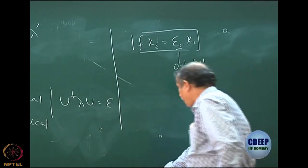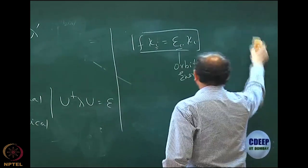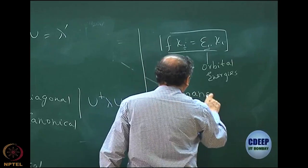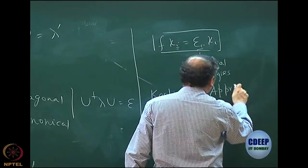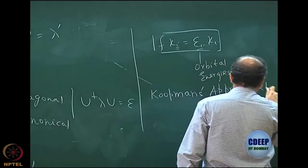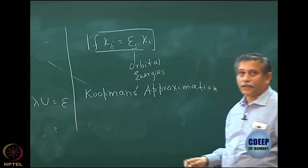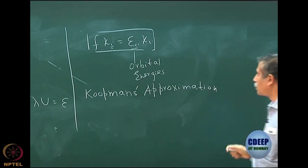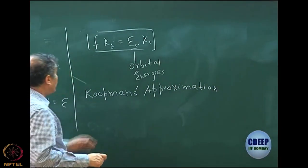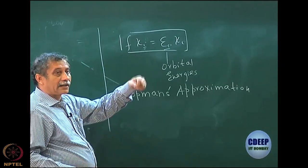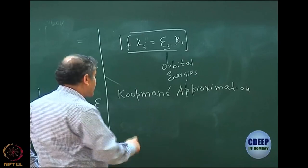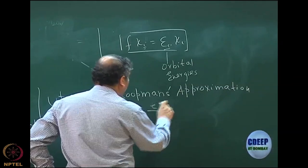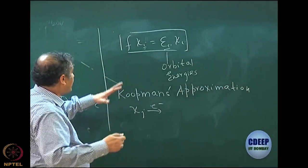These orbital energies are of interest because of an approximation developed by Koopmans. This approximation was given by Koopmans based on a variational method. The basic outcome of the Koopmans approximation is the following: if you take out one electron from a particular χ_j — one electron is knocked out from spin orbital χ_j — then in the original Hartree-Fock you will now have n minus 1 electrons.